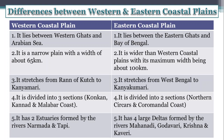Now, the difference between Western Coastal Plain and Eastern Coastal Plain. First: Western Coastal Plain lies between the Western Ghats and the Arabian Sea. Eastern Coastal Plain lies between the Eastern Ghats and the Bay of Bengal.